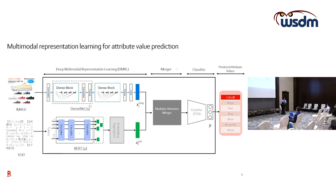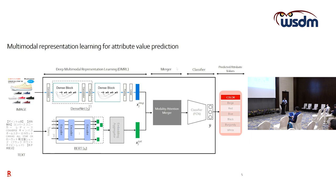The global architecture of the pipeline consists of encoding images using deep models — DenseNet here — encoding textual information using BERT, and then merging modalities, which is the main focus of this talk as it is where we brought our main contributions, followed by a classifier to predict the attribute values.